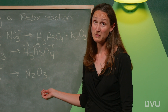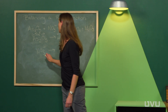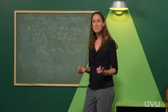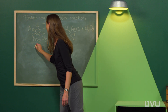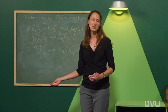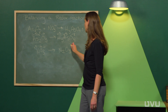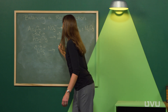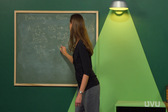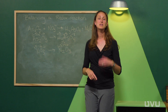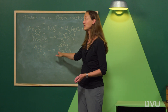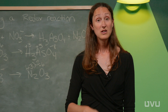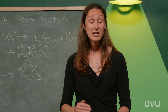For nitrogen: in nitrate, three oxygens give minus six, and the overall charge is minus one, so nitrogen must be plus five. In dinitrogen trioxide, three oxygens give minus six, two nitrogens each at plus three give plus six, and six minus six equals zero — matching the neutral compound. The nitrogen oxidation state went from plus five to plus three — it went down, so this is reduction. This was a two-electron reduction of the nitrogen atoms.